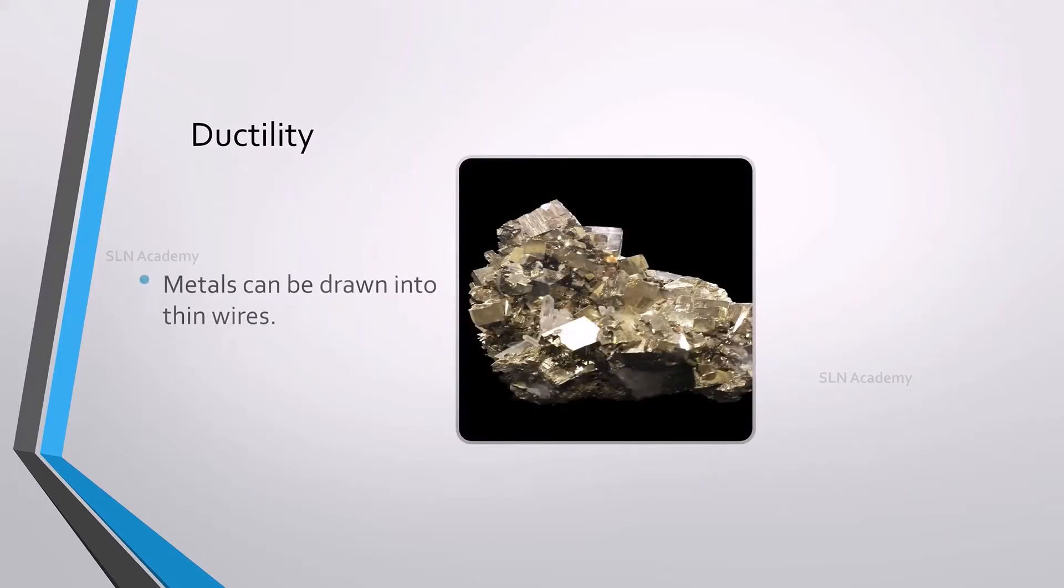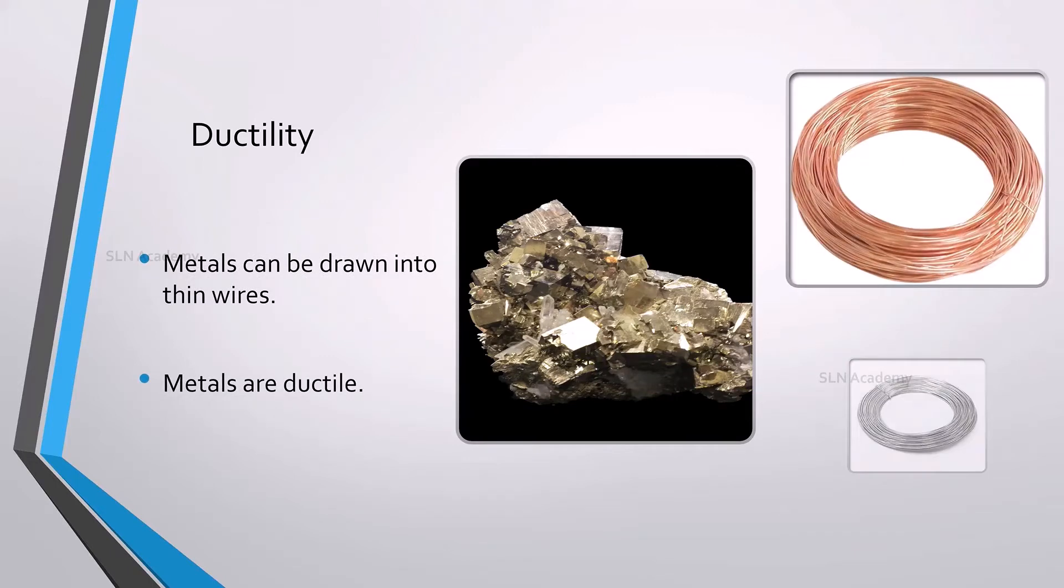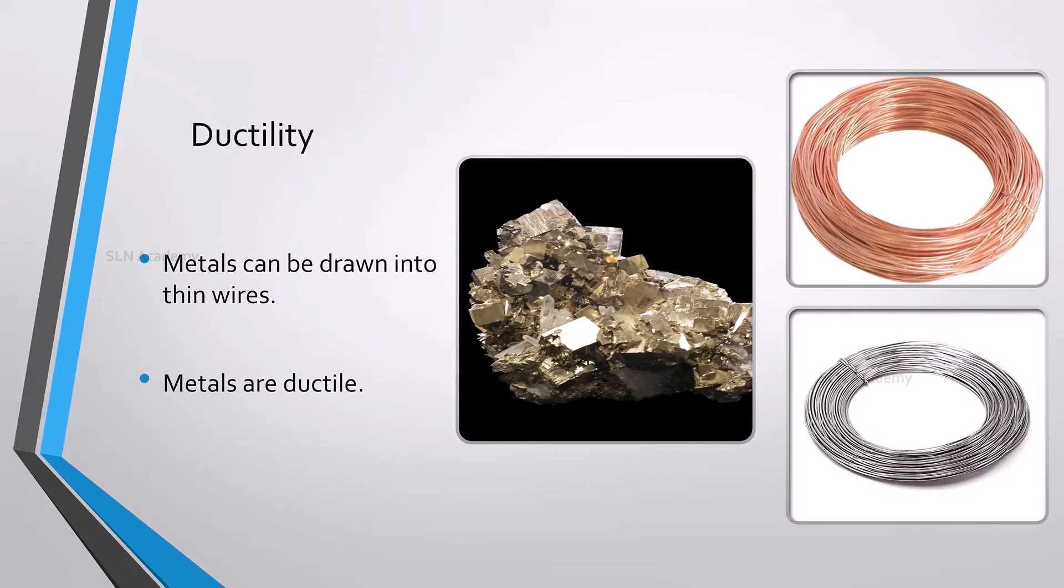Metals can be drawn into thin wires. So, we can say that metals are ductile. Gold is the most malleable of all known metals. Gold can be turned into very thin sheets and very thin wires, thinner than human hair. So, gold is widely used in jewelry.